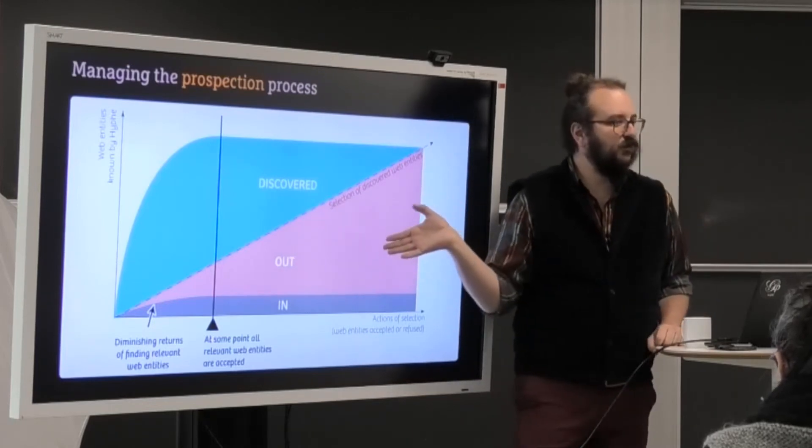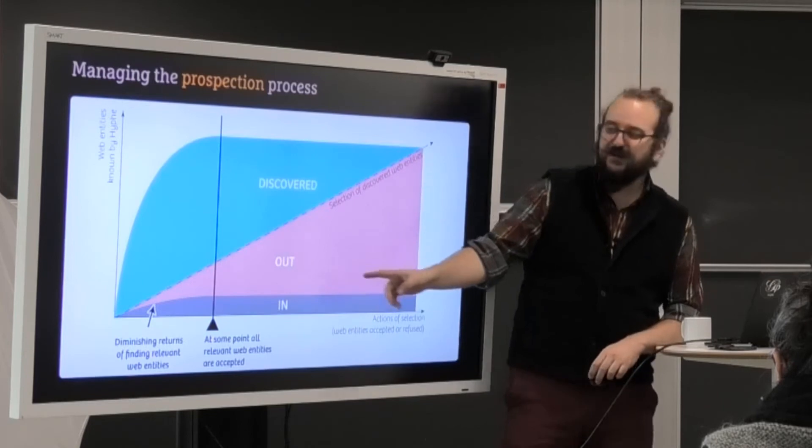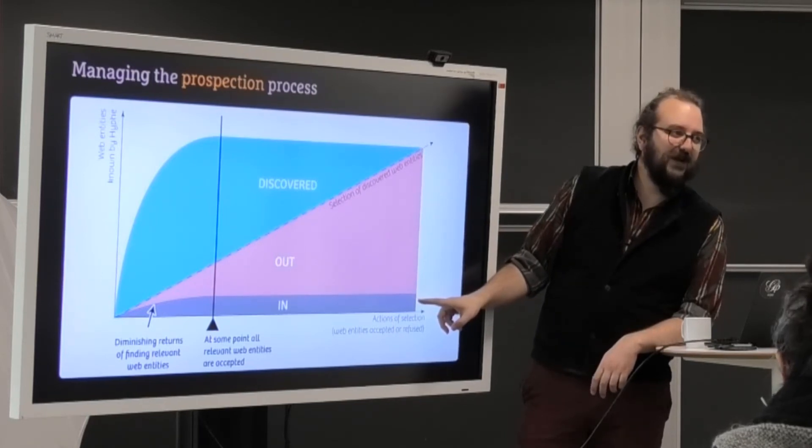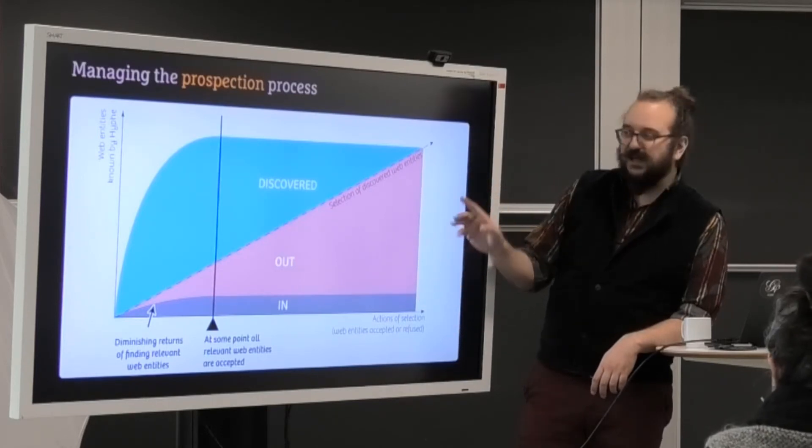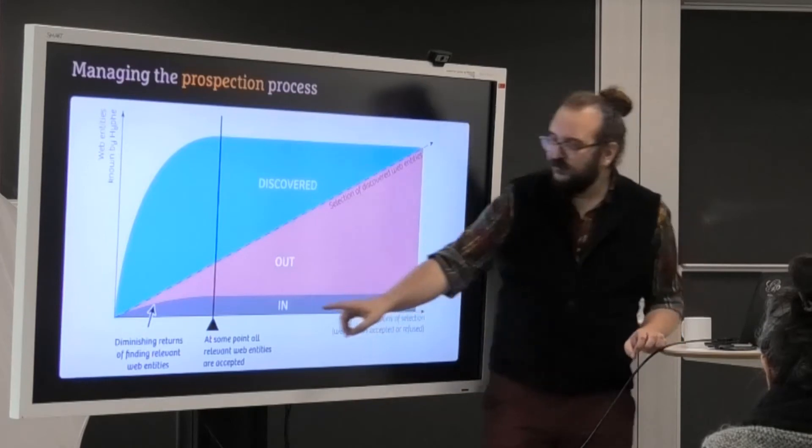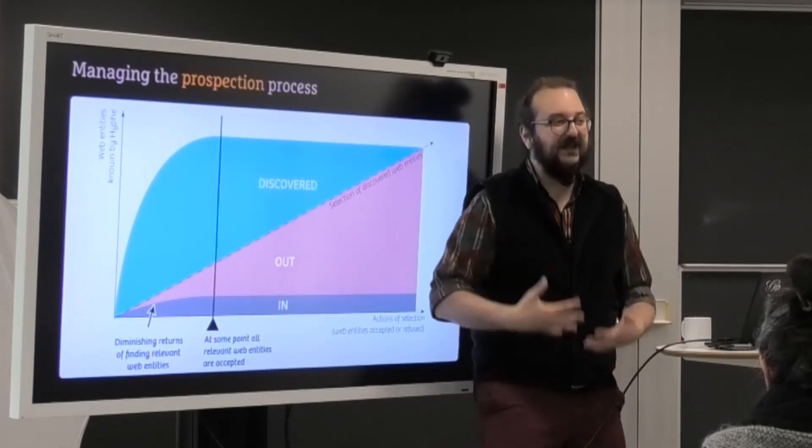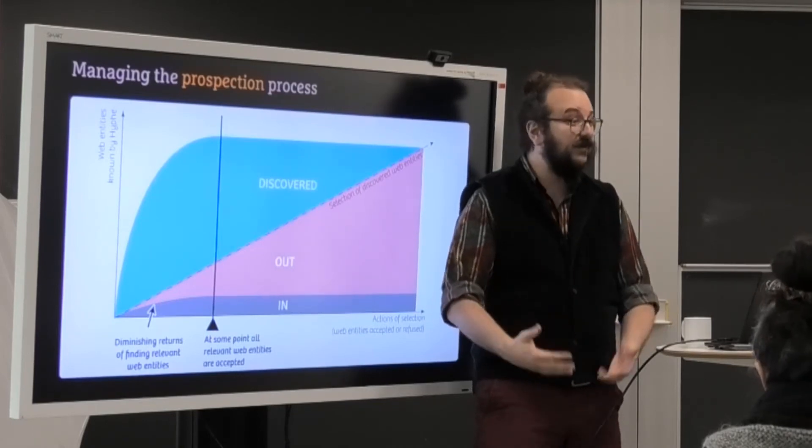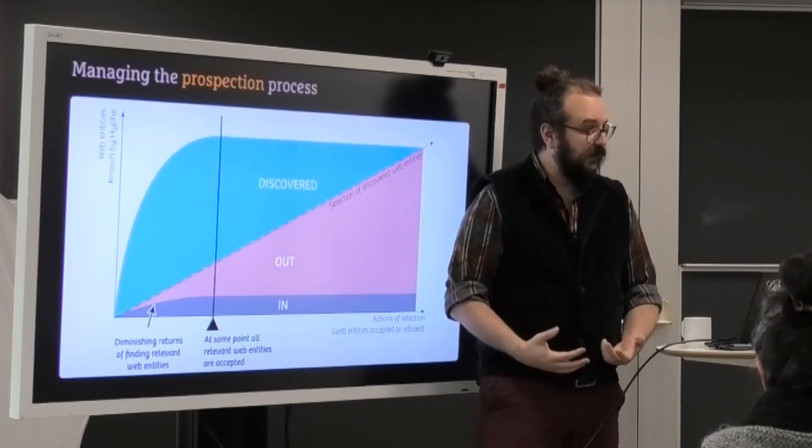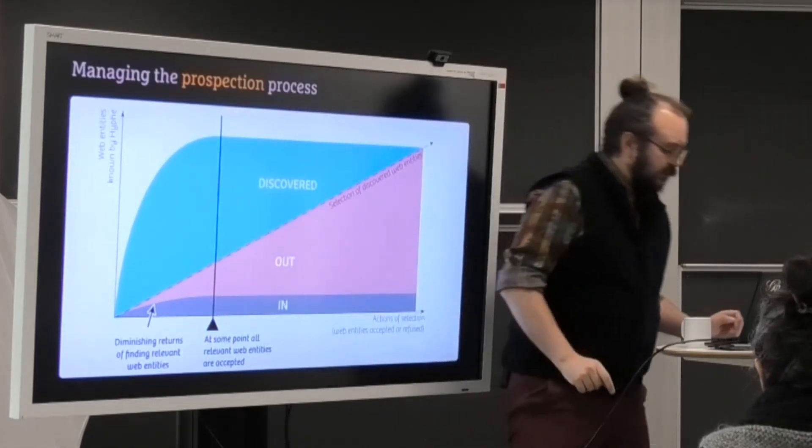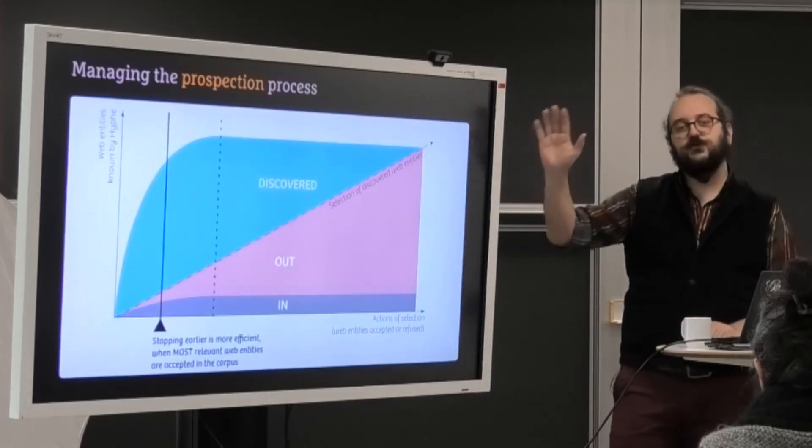And here I have been very nice because I have assumed a proportion of IN to the rest of like one over 10, but the real proportion is more like one over 1,000. It means that if you were to go to the end, you would lose all of your time because you have diminishing returns. In the beginning, you find many IN, but at some point you find less and less. You have more and more noise and less and less good things you want in your corpus. And that's also the moment where the number of DISCOVERED explodes.